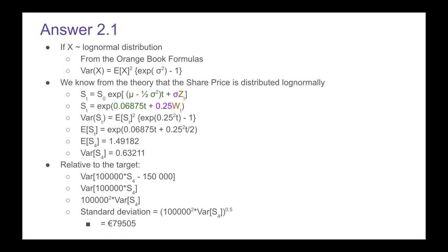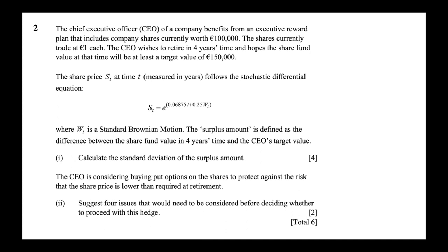That is the first part of the question. The second part says the CEO is considering buying put options on the shares to protect against the risk that the share price is lower than required at retirement. We need to suggest four issues that would need to be considered before deciding whether to proceed with this hedge.